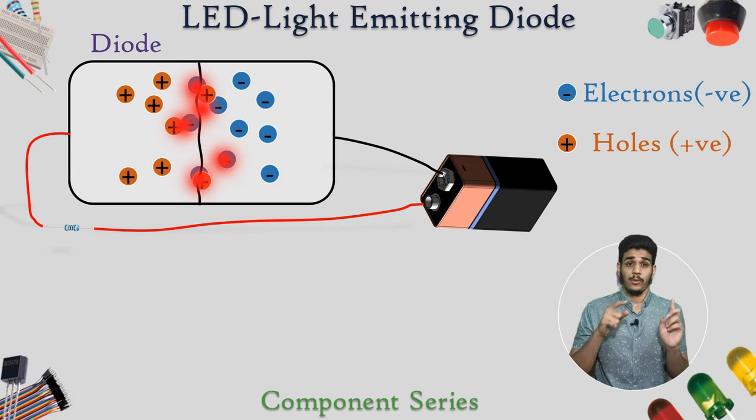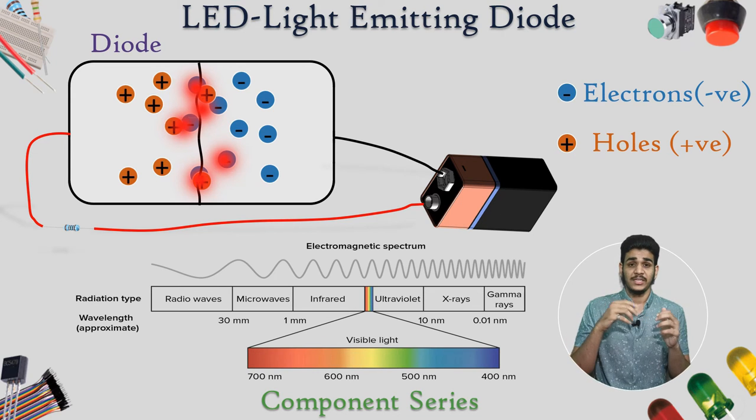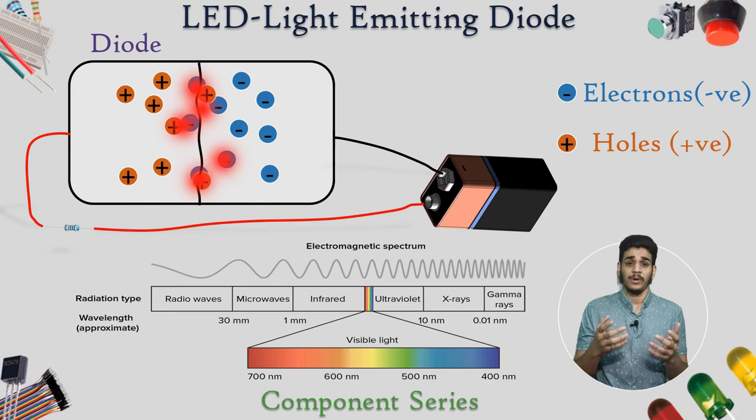But remember, every time holes and electrons combine with each other, they emit light. But every light is not visible to us. So what happens, there are some materials which produce such a light which falls into the visible spectrum for humans.